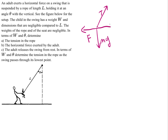We can decompose tension into two of its components. If this is the angle theta, this will still be the angle theta, and this makes the right angle. So from trigonometry, this force becomes T times the cosine of theta, and this force becomes T times the sine of theta.